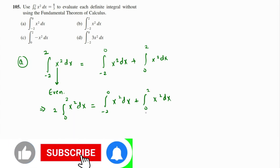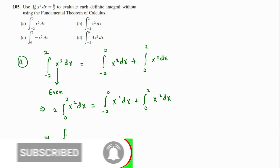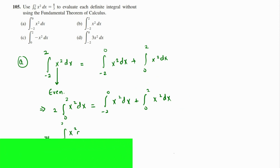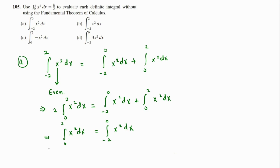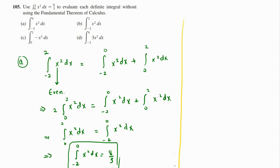So the integral from negative two to zero of x squared dx equals the integral from zero to two of x squared dx. This value is given in the question — it's eight over three. So clearly, the integral from negative two to zero of x squared dx is also eight over three. That's the answer to part a.